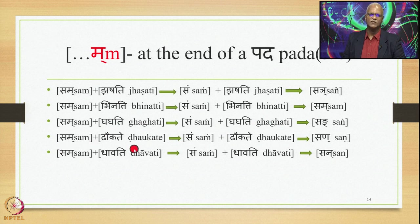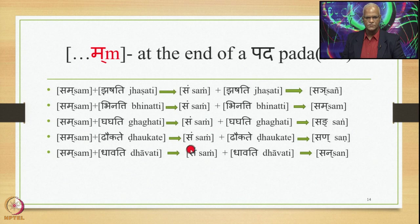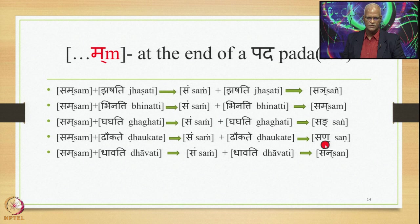Sam plus Dhawkate: 8.3.23 applies, substituting Ma by Anuswara, giving Sam Dhawkate. Then 8.4.59 applies and substitutes the Anuswara by Na (nasal Parasavarana), giving Sam Na Dhawkate optionally, and Sam Dhawkate (with Anuswara) as the other optional output.